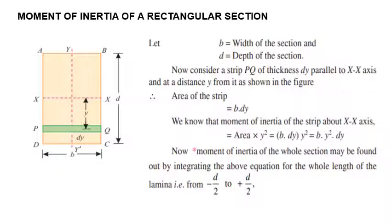Now let us apply the integration principle to get the moment of inertia of a rectangular section. We have a rectangular section of width B and depth D. We consider a small strip PQ shown in green, with thickness DY located at a distance Y from the XX axis. The area of this strip is B into DY.